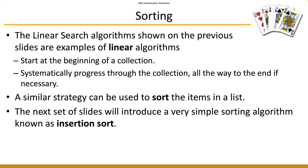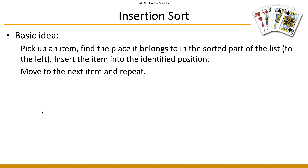The basic idea is that if a particular list is currently not sorted, you pick up an item and find the place it belongs to in the sorted part of the list. We usually use the left-hand side of the list to represent that sorted portion. So you pick an item that's not sorted yet and try to find the right place to insert it.